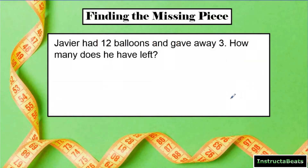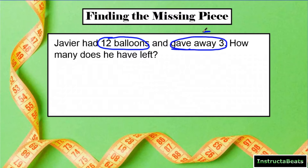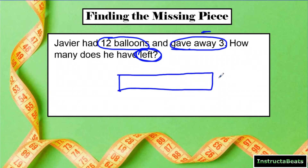Sometimes you're going to be finding a missing piece. Same type of question: Javier has 12 balloons and he gave away three — I'm going to annotate that with a subtraction sign — and you want to know how many he has left. We want to prove that with a visual model, so again we're going to do our part-whole model. All the balloons he had were equal to 12, so now we know the total — we know how big our tape diagram is.